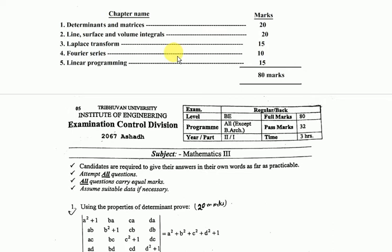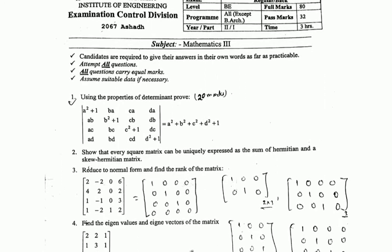According to the chapters: Chapter 1 is Determinants and Matrices with 20 marks, Chapter 2 is Line Surface and Volume Integrals with 20 marks, Chapter 3 is Laplace Transform with 16 marks, Chapter 4 is Fourier Series with 16 marks, and Chapter 5 is Linear Programming with 8 marks. Your total is 80 marks for the final exam. Let's start the video.